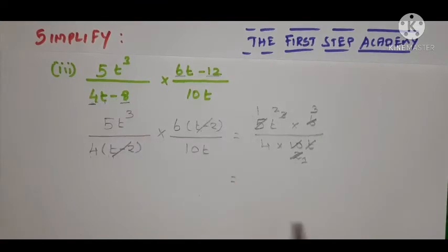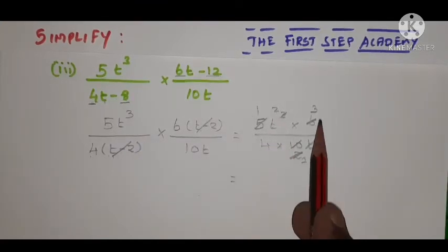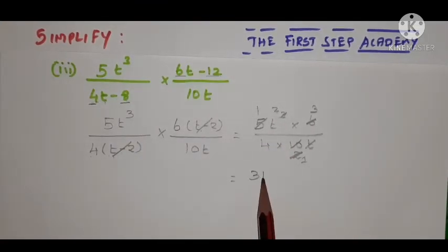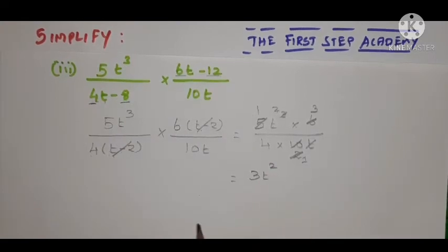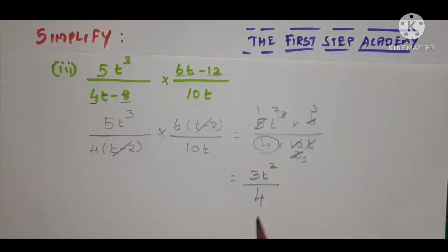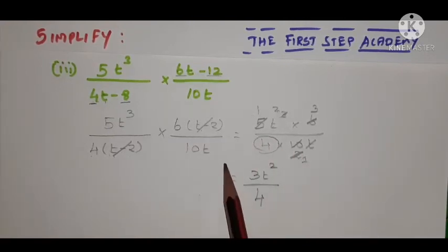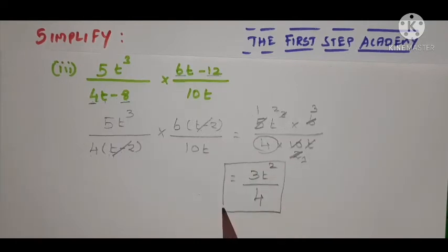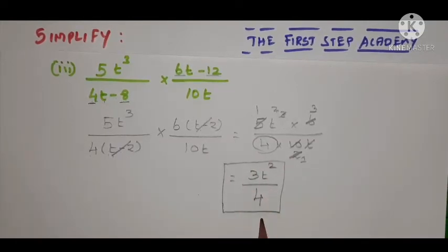Look here: t² remains, 3 here. So 3t² are the remaining values in the numerator, divided by—in the denominator we have only 4. So 3t²/4 is the answer for this particular problem.